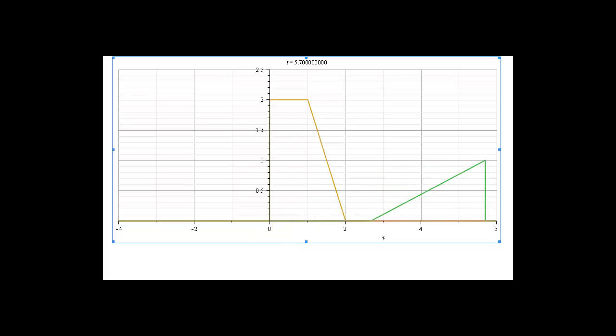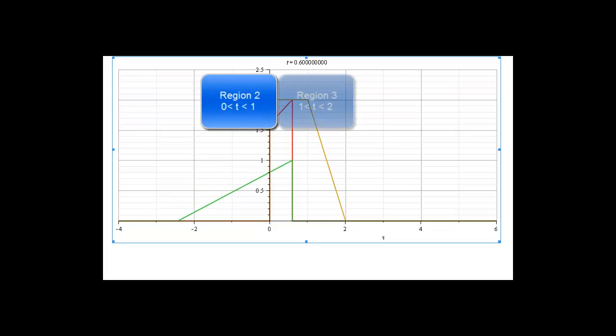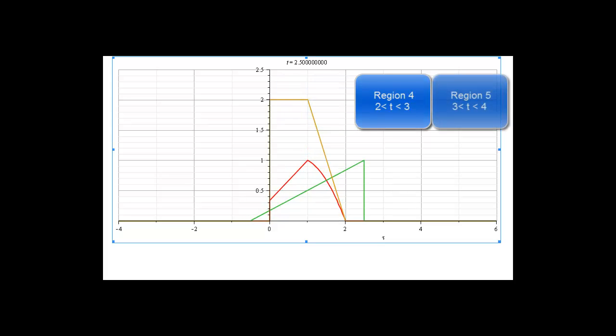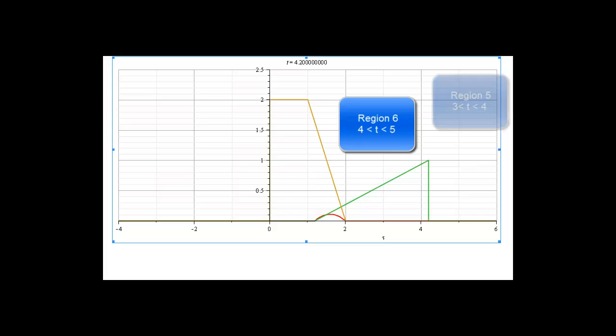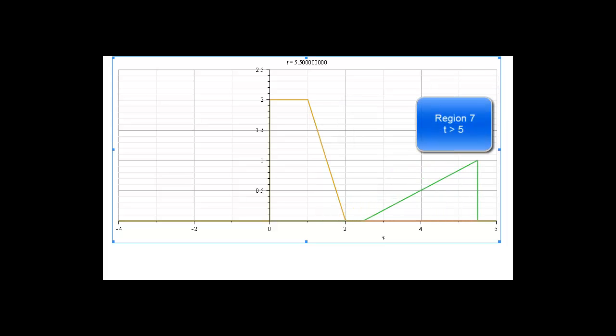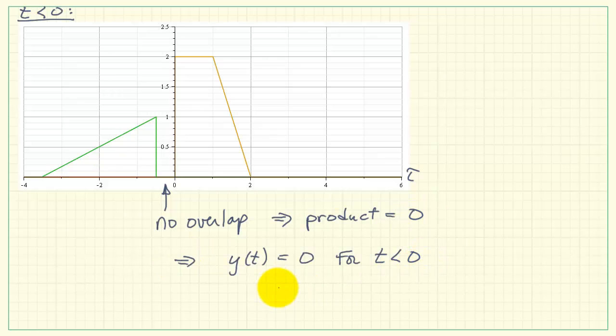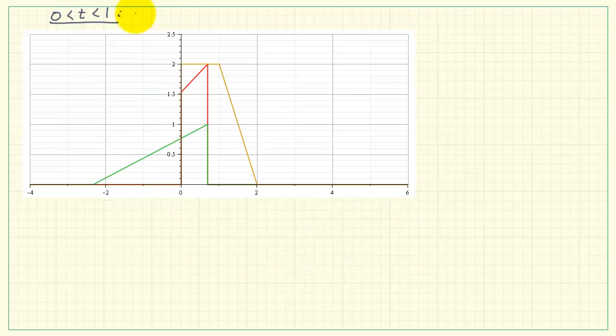Now, as you notice, as this slides back and forth, that is, as h slides back and forth with respect to x, we end up with seven different regions, as it turns out. Because these are piecewise linear functions, we can set up the integration in each one of these distinct regions. So as it slides past x, we have these seven regions. Let's consider the case where t is less than zero first. We have no overlap. That means the product is zero. Therefore, if we're integrating zero, we just have zero. So the output is zero for t less than zero.